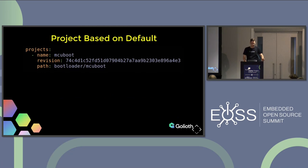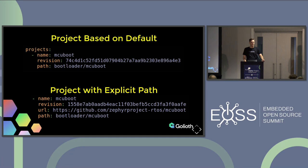The most confusing thing for a lot of people is: where is the code coming from? In the previous slide, there's no actual location — you can't put it in your browser or do a git clone of it. But if you were going to use a more explicit path, it would be very similar. One of them has the URL explicitly spelled out and the other has it constructed from the actual way manifest files are put together.